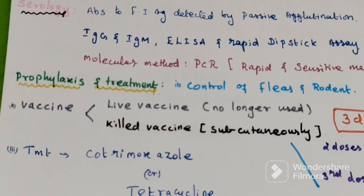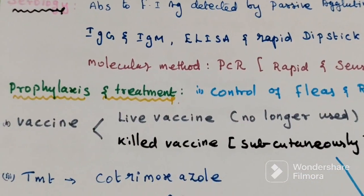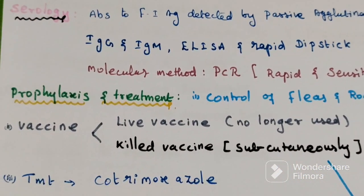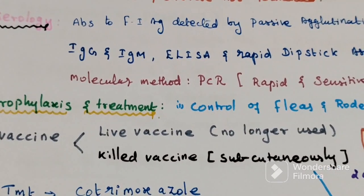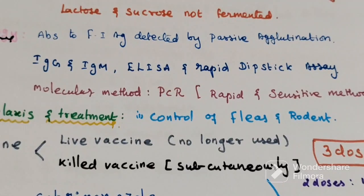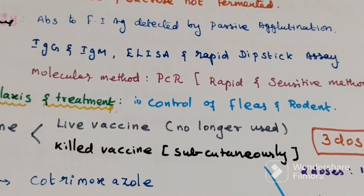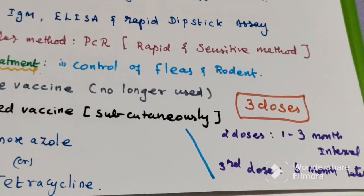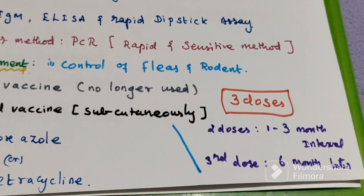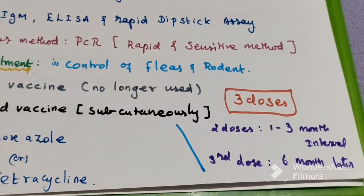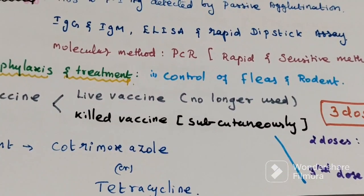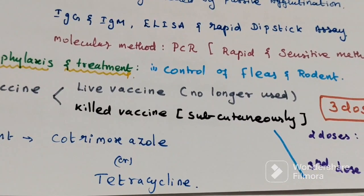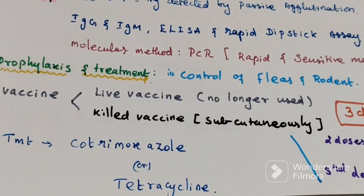Prophylaxis and treatment. For prophylaxis: control of fleas and rodents. Two types of vaccines are used — killed and live vaccine; live vaccine is no longer used. Killed vaccine is given subcutaneously in three doses: first two doses at one to three month intervals, third dose six months later. For treatment, cotrimoxazole and tetracycline are the drugs of choice.